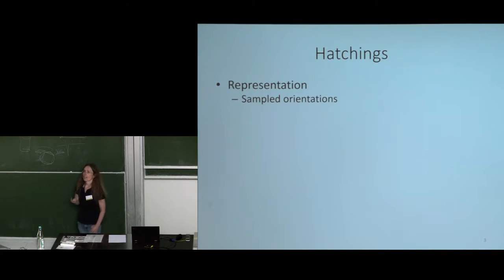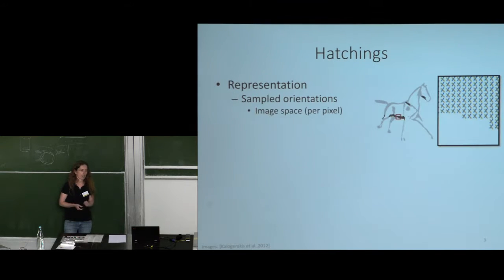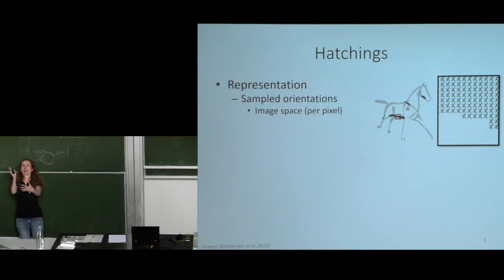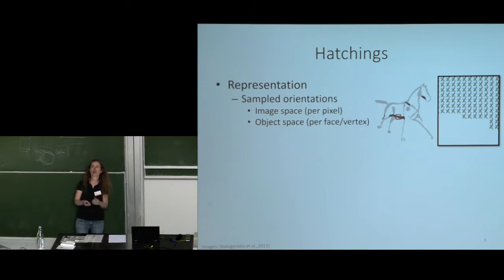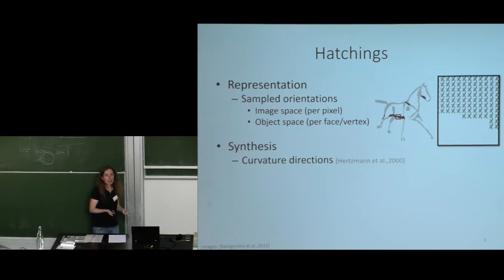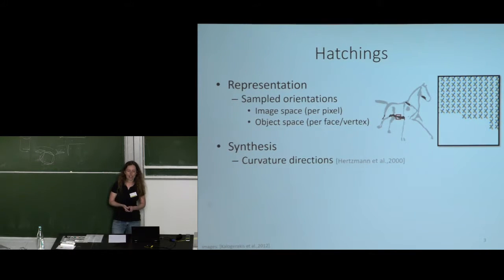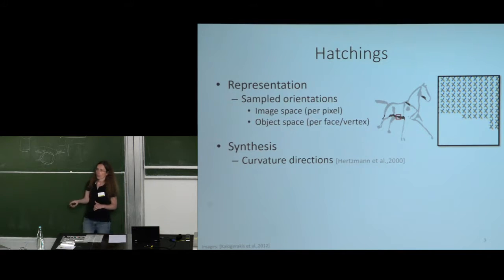In general, hatching involves a bunch of orientations — you want to know in which direction each line is going to face. These orientations can be specified in image space, where at every pixel you have some orientation, or in object space, meaning on the surface itself. For cross-hatching you actually have two orientations. The way to generate these orientations — one option is to use curvature directions, which is related to the work on quad meshing. Another more recent option is machine learning: take illustrations generated by artists and train a model to output the orientations.